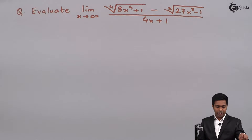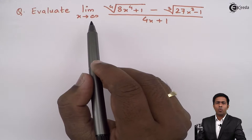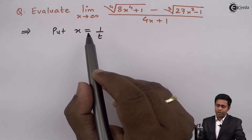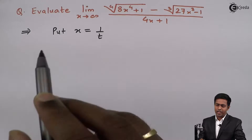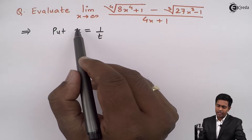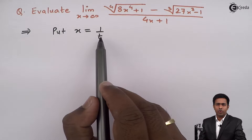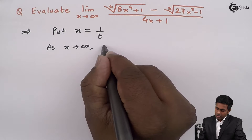Before starting the solution, observe that the given limit has x tends to infinity. Whenever we have x tends to infinity, we substitute x as 1/t. When x tends to infinity, we get infinity equals 1/t, which is possible only if t equals 0. So as x tends to infinity, t tends to 0.